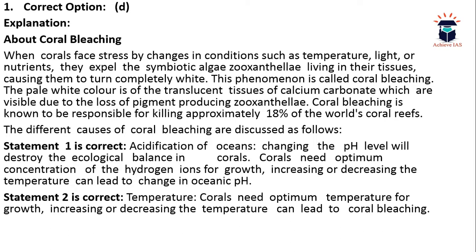Coral bleaching occurs when coral is stressed by changes in conditions such as temperature, light, or nutrients. Coral reefs have a living microorganism — zooxanthellae — that lives in their tissues and forms a symbiotic relationship with them. When zooxanthellae are expelled from the body, this process is called coral bleaching. The corals turn white, and coral bleaching is responsible for killing approximately 18% of the world's coral reefs.